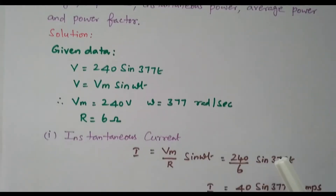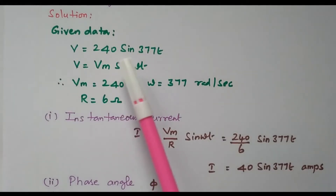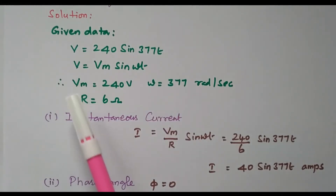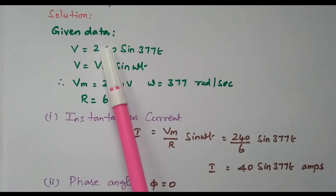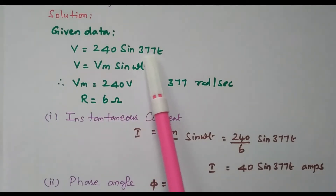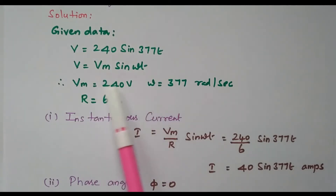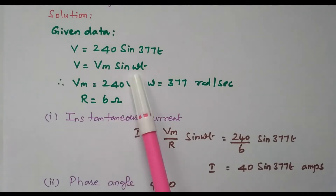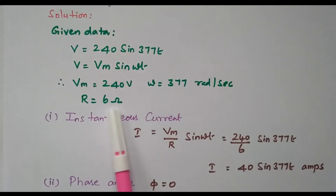From the given data, the voltage is V = 240 sin 377t. This is the standard form V = Vm sin ωt. By comparing these two equations, we can identify Vm = 240 volts and ω = 377 radians per second. The resistance R is given as 6 ohm.